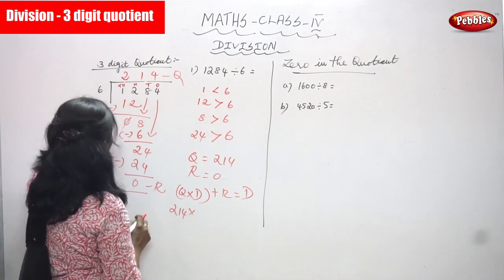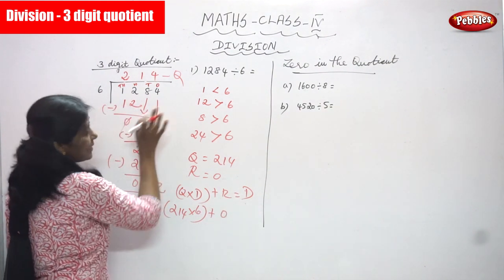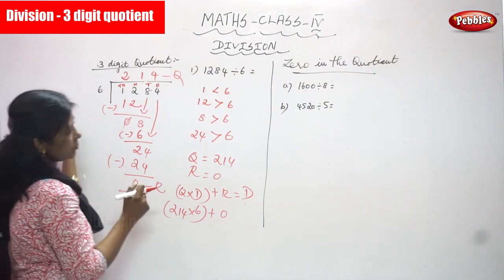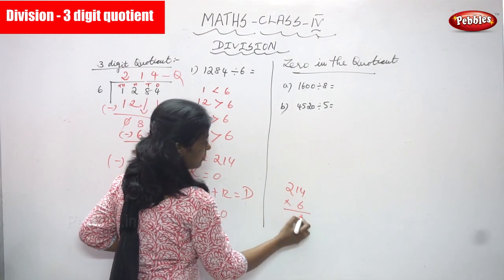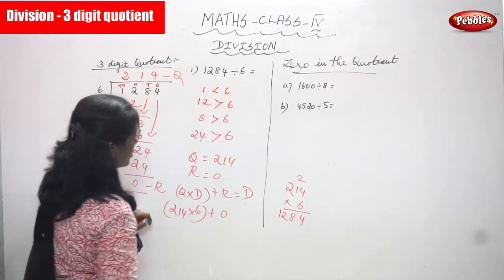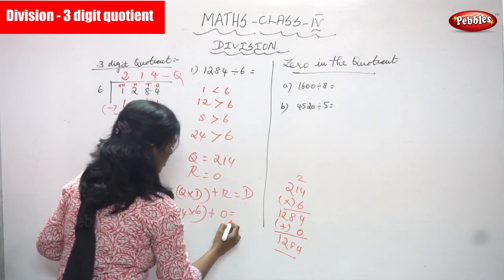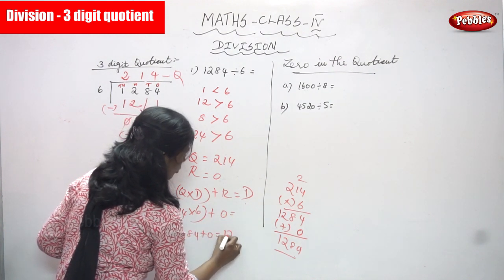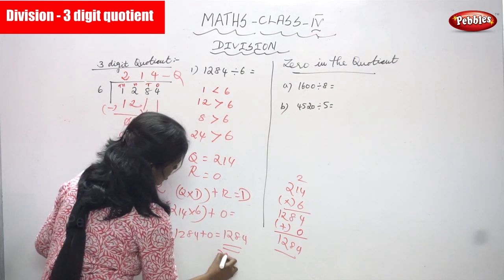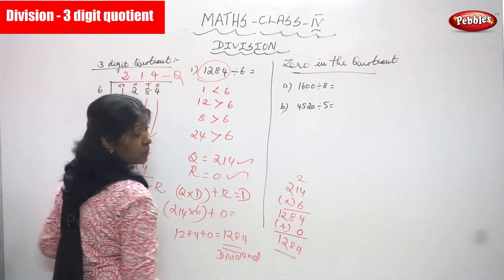Quotient is 214, divisor is 6, remainder is 0. So: 214 × 6 + 0 should equal the dividend. Multiply 214 by 6: 6 × 4 = 24, write 4 carry 2; 6 × 1 = 6, plus 2 = 8; 6 × 2 = 12. Result is 1284. Add the reminder 0: still 1284. That is the dividend — so the quotient 214 and remainder 0 are both correct.